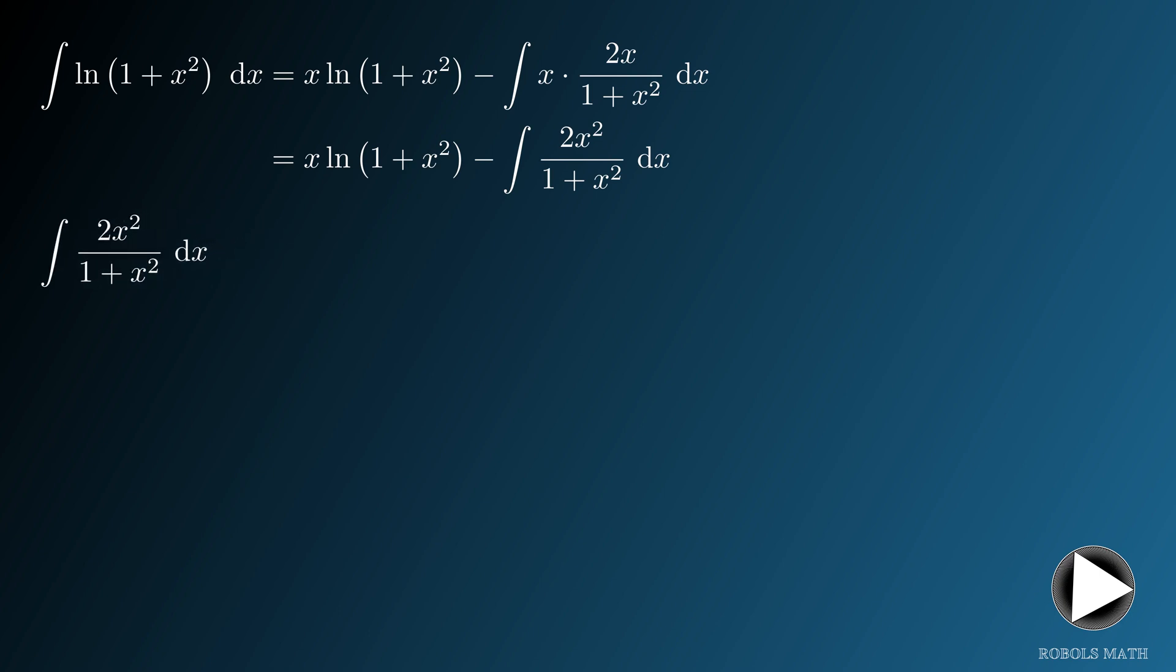Of course, we can factor out the 2, so let's do that. Next, we add and subtract 1 in the numerator. Then we split the terms.